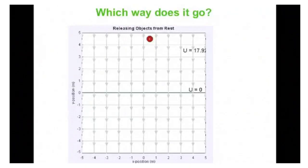So we let this guy go from rest, and it falls down, it goes toward U equals 0, it keeps going past U equals 0, potential energy decreases.